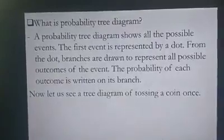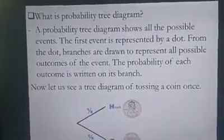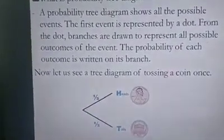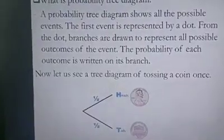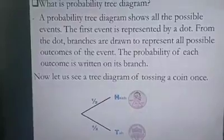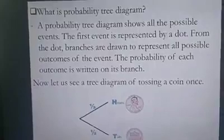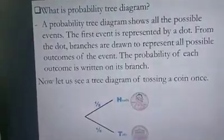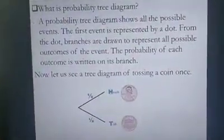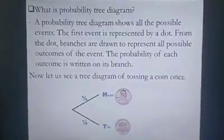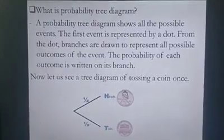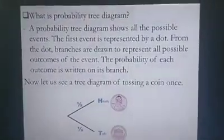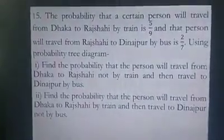Now let us see a tree diagram of tossing a coin once. If we toss a coin, we know there are two possible outcomes: head or tail. The probability of getting a head when tossing one coin is one-half, and the probability of getting a tail is also one-half. This is how the tree diagram shows the probability outcomes — you can easily see there are two possible outcomes. This is how we represent probability outcomes through probability tree diagrams.